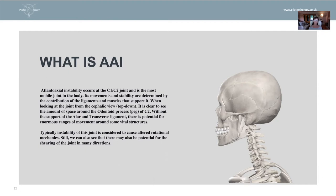Without the support of particular ligaments — the alar ligament and the transverse ligament — there is a real potential for large ranges of movement around some really vital structures, both nerves and vascular. Typically, instability of this joint is considered to cause altered rotational mechanics. We can see that if you have potentially loss of support from those ligaments, there might be a shearing of the joint in different directions, but medically speaking, the assessment of AAI is done on the rotational plane of movement.